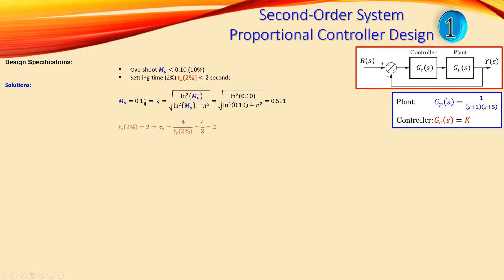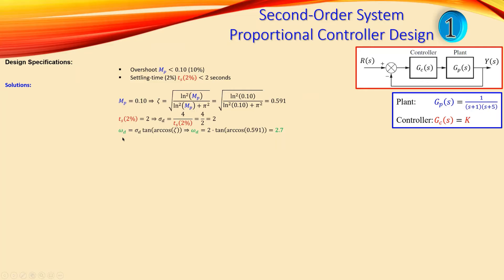The next step uses the settling time formula. Setting the settling time equal to 2, we calculate the absolute damping σ_d = 4 divided by the settling time, giving σ_d = 4/2 = 2 radians per second — an important parameter we will use later. We also need ω_d, the imaginary part of the design point, which by geometry equals σ_d times tan(arccos(ζ)), giving 2 × tan(arccos(0.591)) = 2.7 radians per second.